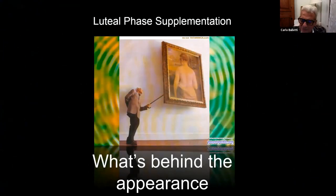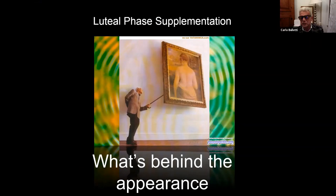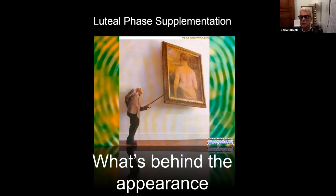I think that progesterone should be considered the luteal phase supplementation in that cycle with downregulation. I believe that the use of progesterone is still a matter of supplementary studies, because we know that the window of implantation within another way of production of progesterone is around 24 to 32 hours. We should arrive to use progesterone and to enlarge the window of implantation from one day to three or four days to significantly improve the pregnancy outcome in our cycles with downregulation. Thank you very much.